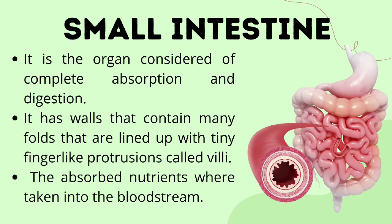The villi are connected to our capillaries and blood vessels, and the nutrients are delivered to different parts and cells of our body. The small intestine is arguably the most important part of our digestive system because the main function of the digestive system is carried out here — the absorbed nutrients are taken into the bloodstream through the processes called absorption and assimilation.